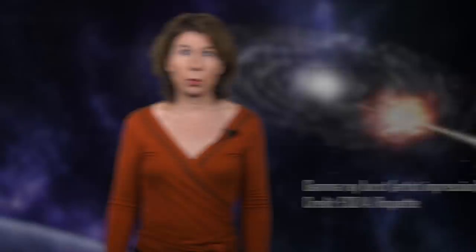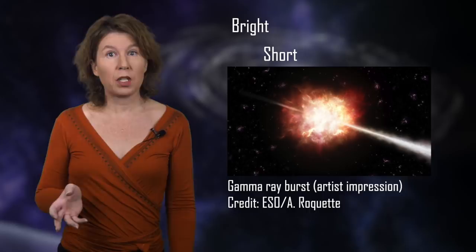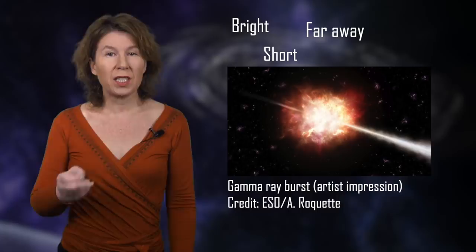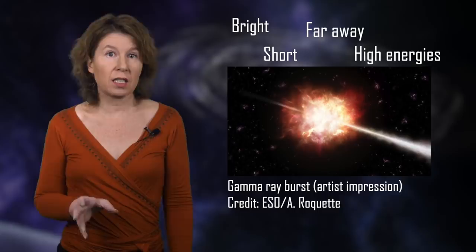The currently best experiments for this come from analyzing electromagnetic radiation from gamma-ray bursts. This is mostly because gamma-ray bursts are bright, short, and can be far away, often several billion light years. Moreover, they emit electromagnetic radiation up to really high energies. Since one knows that the light must have been emitted in the burst at about the same time regardless of its energy, one can then test whether it also arrives at the same time.